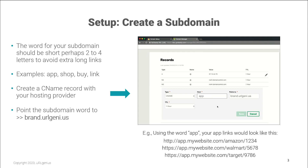The setup process is simple. Create a subdomain for your URL Genius links. The word for your subdomain should be short, perhaps two to four letters to avoid extra long links. Examples could be app, shop, buy, or link. Create a CNAME record with your hosting provider and then point that word to brand.urlgenie.us, like in the diagram on this slide. For example, using the word app, your app links would look like app.mywebsite.com slash the name of the app slash the customized ending at the end of the link.